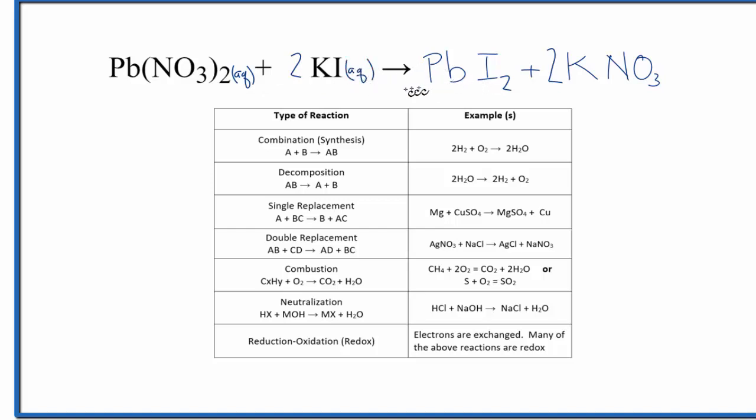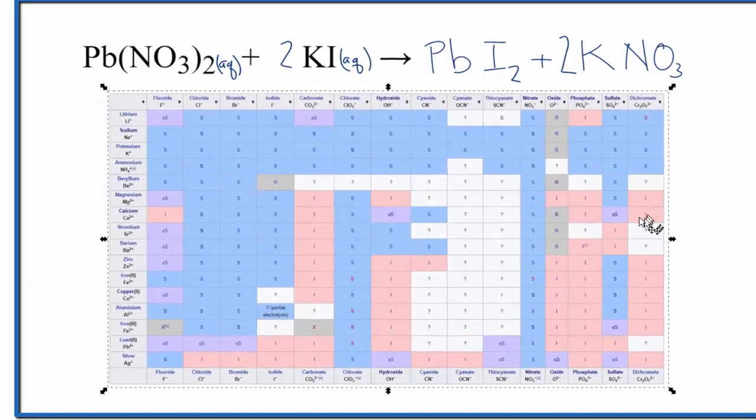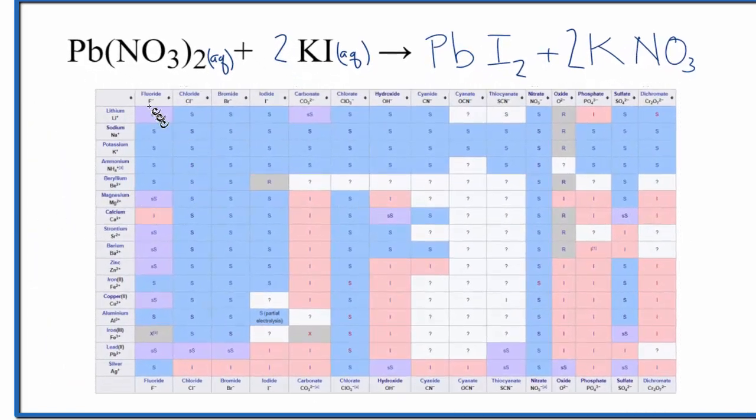This PbI2 though, I'd like to look that up on a solubility table just to make sure. I'm not quite sure of its solubility. So if I look at this solubility table here, I can go down and here's lead, and then I'm looking for iodine, the iodine ion. I go all the way down here and right there it says I.